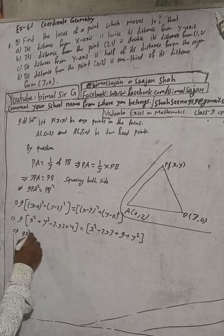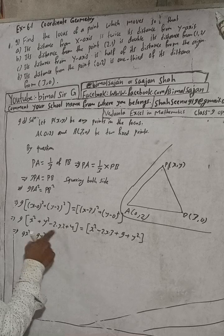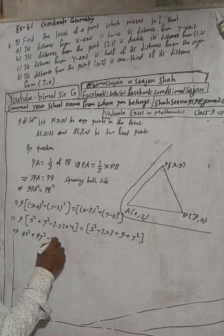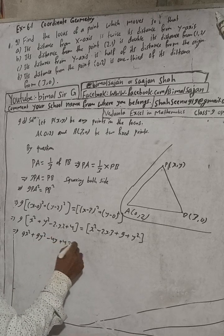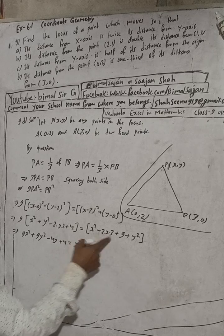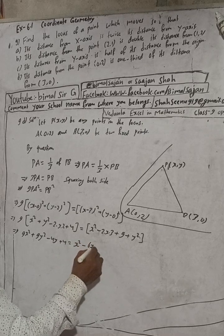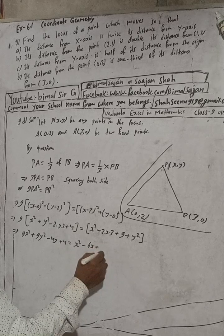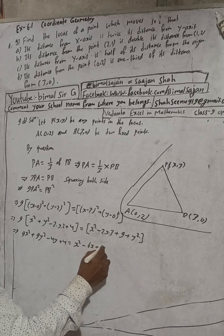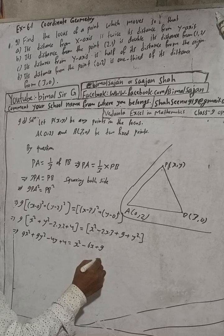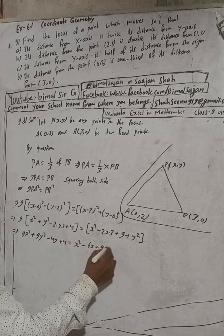Multiplying the left side by 9: 9x² + 9y² - 36y + 36 is equal to x² - 6x + 9 + y².